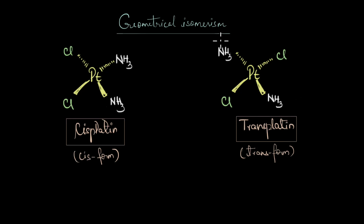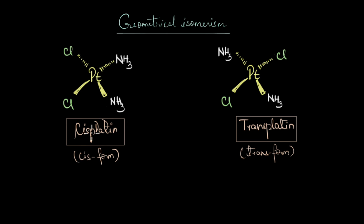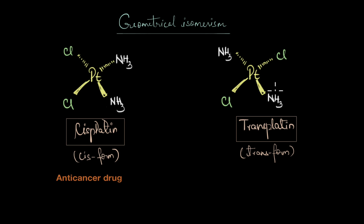We know that in certain geometries coordination complexes exhibit geometrical isomerism, and the way the ligands are arranged in space can have a significant effect on their chemical and physical properties. We saw that by using the example of cisplatin versus transplatin. In the cis form, cisplatin acted as an efficient anti-cancer drug, but the same compound arranged differently in the trans form did not show any promising biological activity.